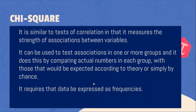What is chi-square? Chi-square is similar to tests of correlation in that it measures the strength of associations between variables. It can be used to test associations in one or more groups by comparing actual numbers in each group with those expected according to theory or simply by chance. It requires that data be expressed as frequencies.